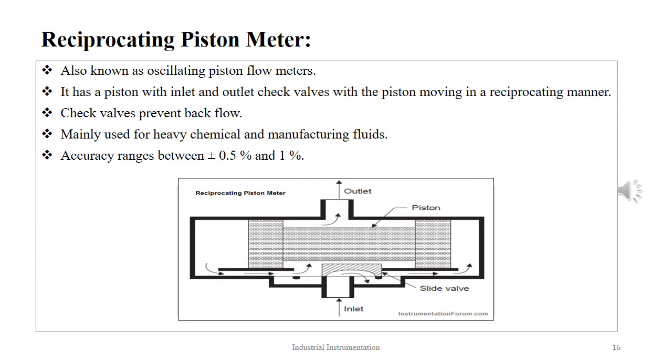The next type is the reciprocating piston meter. The reciprocating piston meter is also known as oscillating piston flow meter. It has a piston with inlet and outlet check valves with the piston moving in a reciprocating manner. The check valves prevent the backflow.